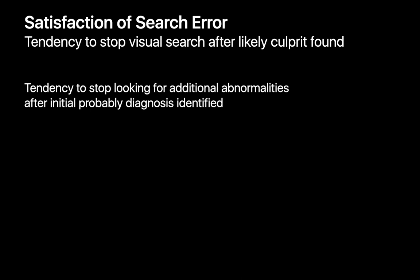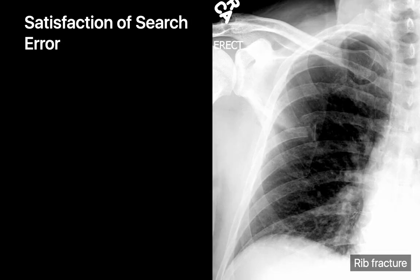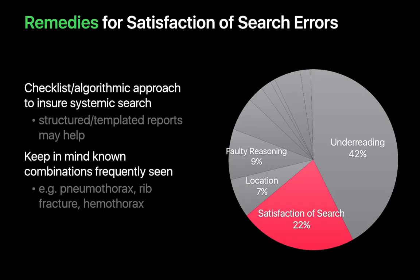Satisfaction of search errors occur when a radiologist prematurely stops or eases off their visual search for additional abnormal findings after finding an initial abnormality. Most people will see the rib fracture on this image, but will they also see the scapular fracture and the pneumothorax? The best remedies are to have a systematic checklist approach to reading studies — structured reports can sometimes help — and to be aware of abnormal findings that commonly cluster together, like rib fractures, pneumothoraces, and hemothoraces on chest imaging.